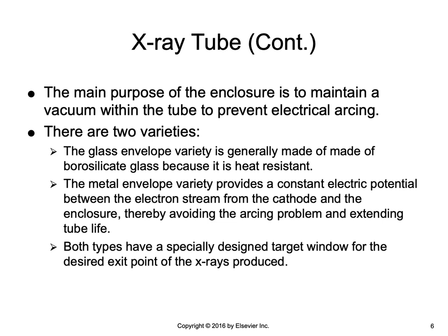The main purpose of the enclosure is to maintain a vacuum within the tube. Because x-ray production involves the interaction between the filament electrons and the anode target, if any air was present, the electrons from the air would contribute to the electron stream, causing arcing and damage to the tube. The glass envelope variety is generally made of borosilicate glass because it is heat resistant. However, as these tubes age, vaporized tungsten from the filament deposits on the inside of the glass, causing a sun-tanning effect due to bronze discoloration, which causes problems with arcing and damage. The metal envelope variety provides a constant electric potential between the electron stream from the cathode and the enclosure, thereby avoiding the arcing problem and extending the tube life.